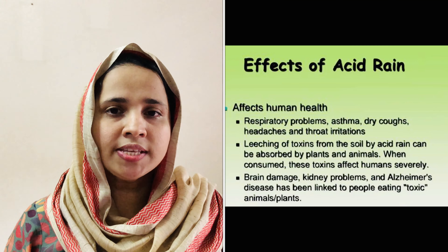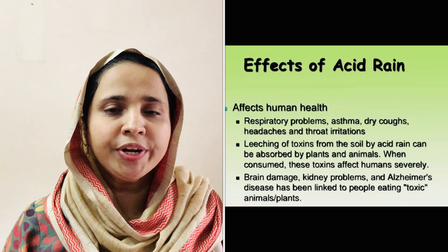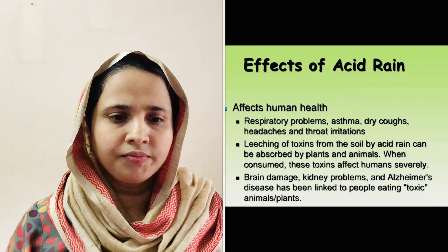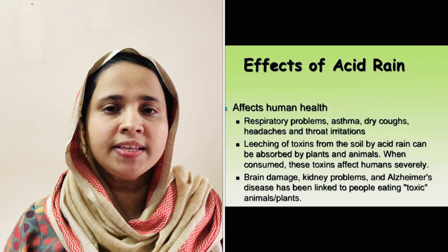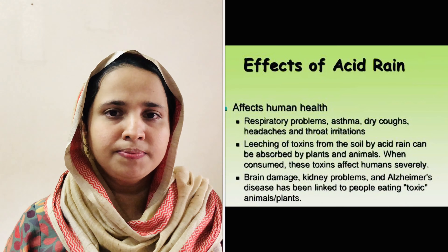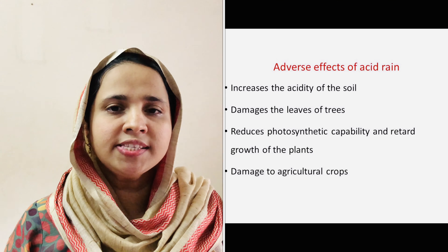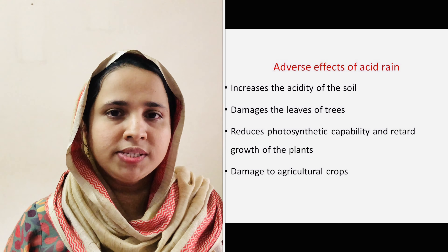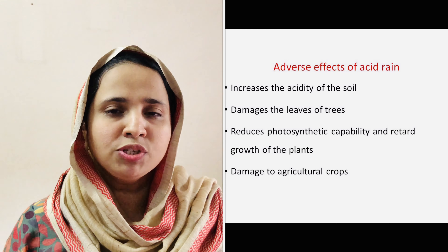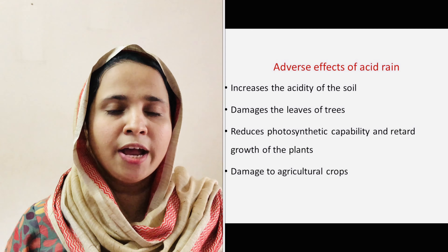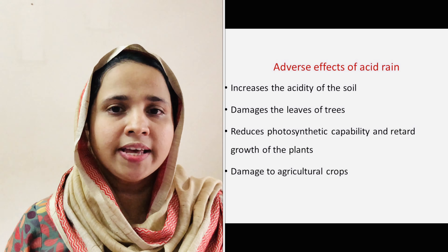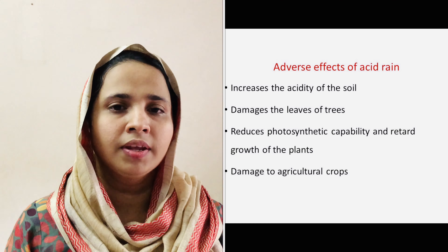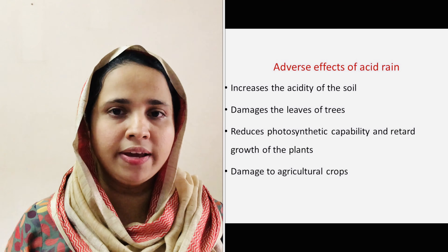Acid rain dissolves and washes away the nutrients needed for the growth of plants and trees, and also increases the acidity of the soil, thereby causing serious damage to plants and agricultural crops. Furthermore, cadmium absorption of plants increases, causing serious health problems to plants and animals.